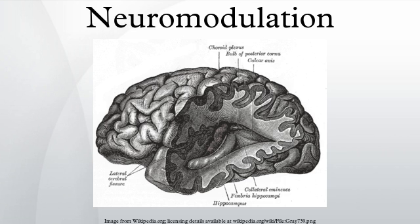The noradrenaline system consists of just 1500 neurons on each side of the brain, primarily in the locus coeruleus. This is diminutive compared to the more than 100 billion neurons in the brain. As with dopaminergic neurons in the substantia nigra, neurons in the locus coeruleus tend to be melanin pigmented. In spite of their small number, when activated, the system plays major roles in the brain. Noradrenaline is released from the neurons and acts on adrenergic receptors.